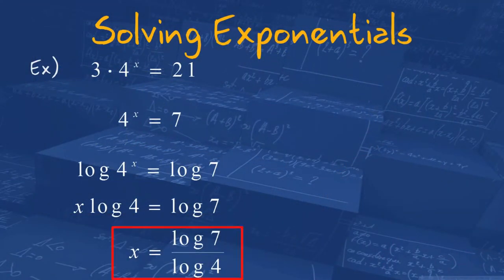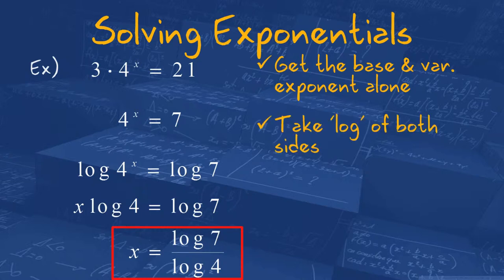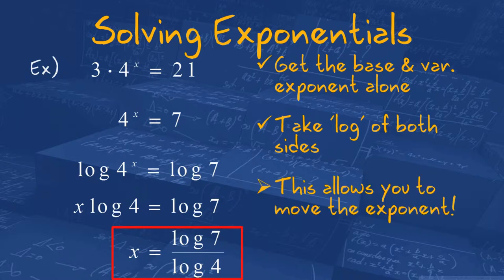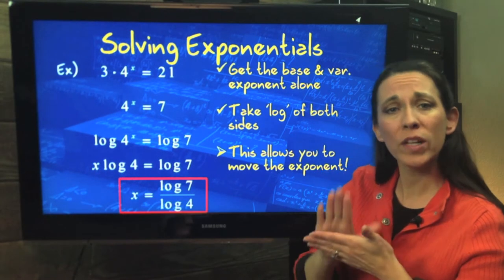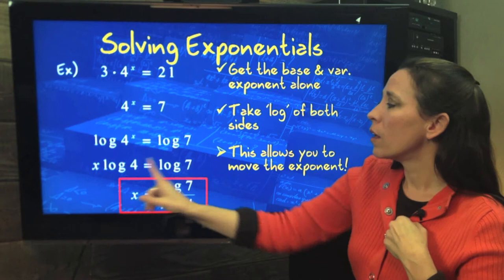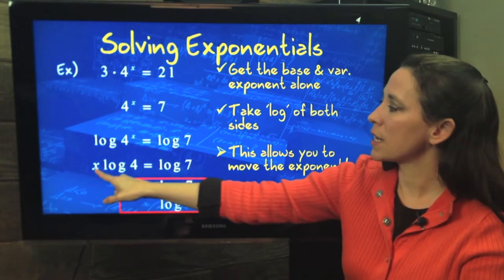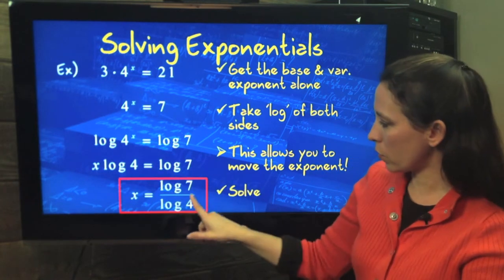We're going to go back and write down the steps. First, we get the base and the variable exponent alone — that's when we divided both sides by 3. We take the log of both sides, or natural log depending on what your base is; usually it's the common log unless we see an e. This allows you to move the exponent to the front, getting rid of the obstacle of x being in the exponent position. Then we solve like we normally do to get x by itself — x equals log of 7 divided by log of 4.